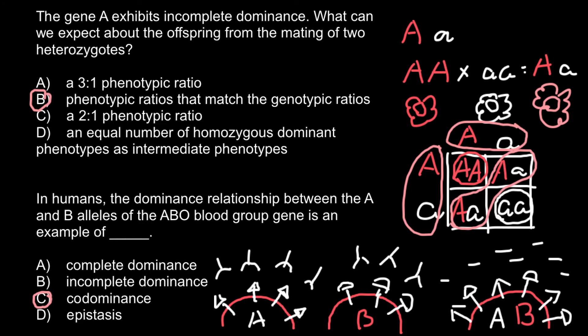By the way, in the ABO blood group system we have not only alleles A and B, but three alleles: A, B, and O. Alleles A and B are co-dominant to each other, but allele O is recessive to both allele A and B. So the ABO blood group system shows us an example not only of co-dominance, but also of simple dominance — alleles A and B are dominant over allele O and co-dominant to each other.